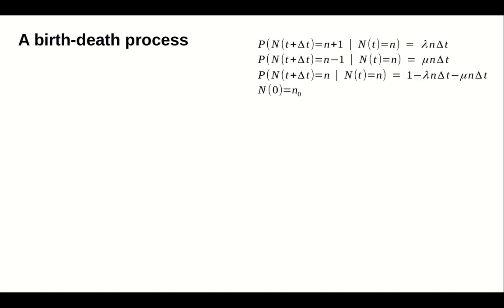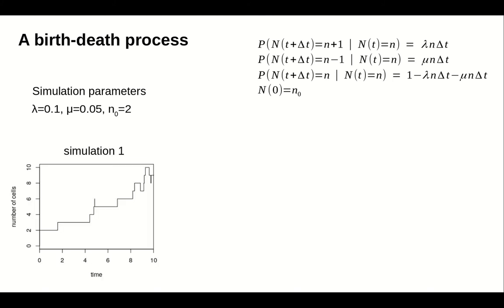To illustrate the birth-death process, let's simulate the model with some of the parameters we discussed earlier. We'll let the birth rate, lambda, be 0.1, and the death rate, mu, be 0.05. Let's imagine we are simulating a population of cells, and we start with n0 equals 2 cells at the beginning of the experiment.